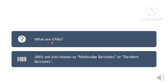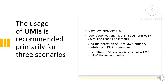UMIs, also known as molecular barcodes or random barcodes, are useful in three scenarios: when you have a very low input sample, when you are going for deep sequencing of RNA libraries, and for the detection of ultra-low frequency mutations in DNA sequencing. In addition, UMI analysis is an excellent QC tool of library complexity.